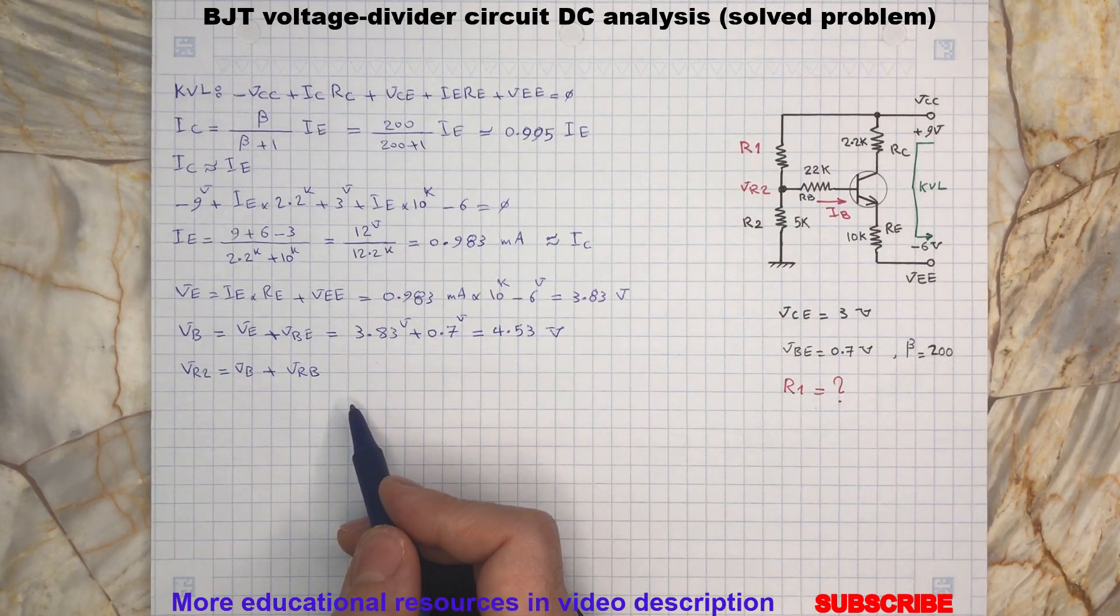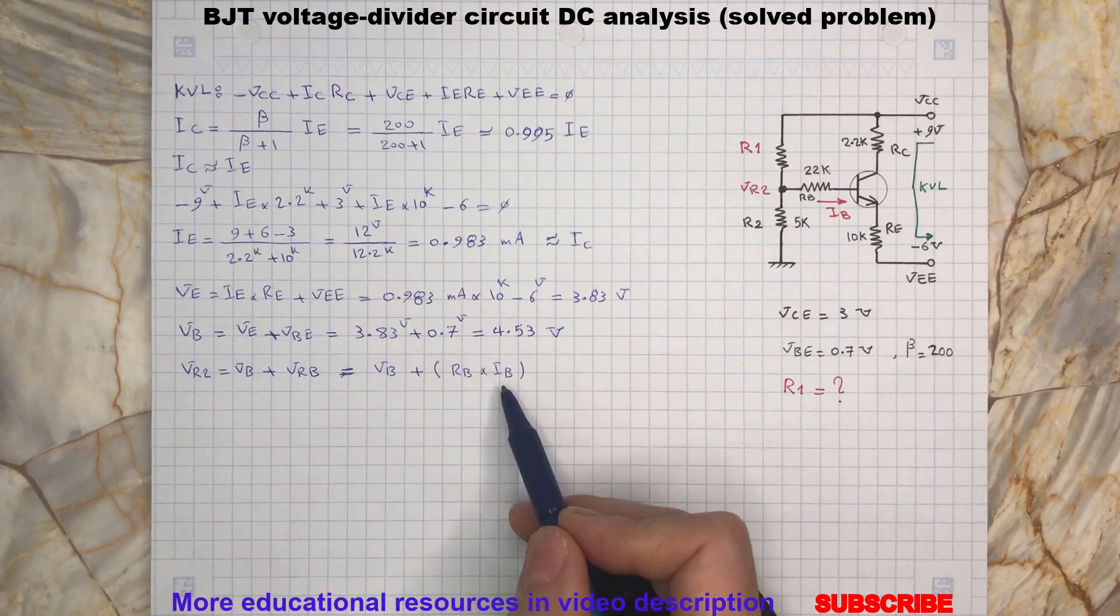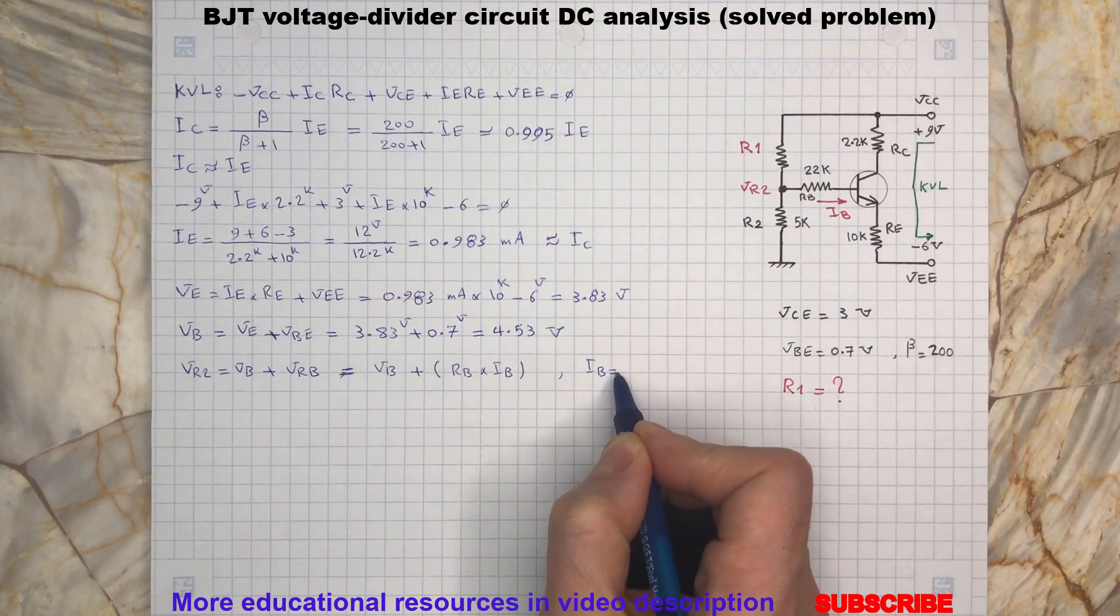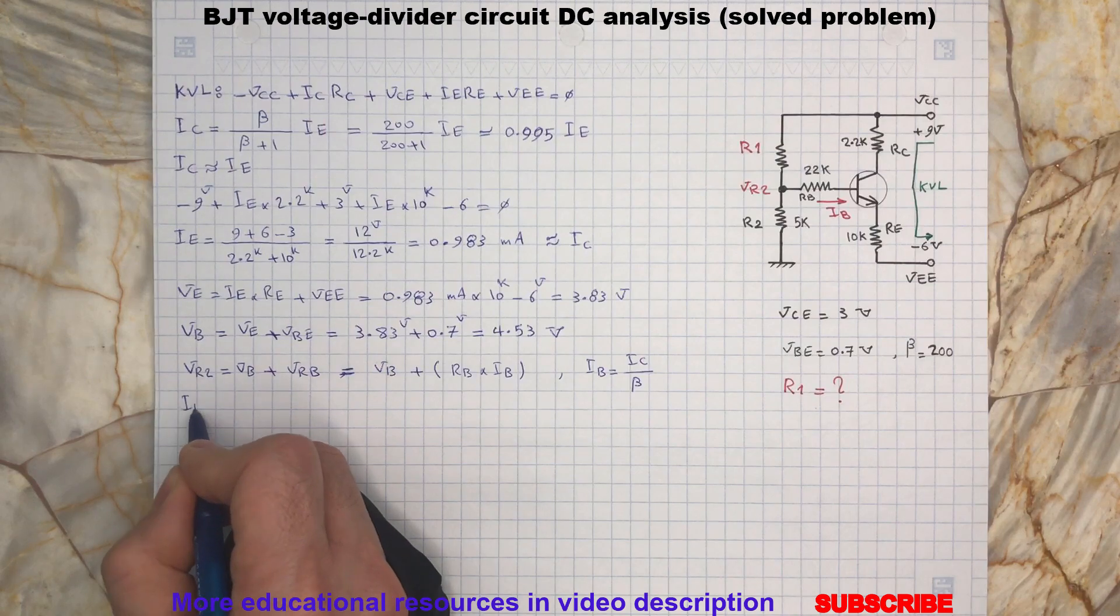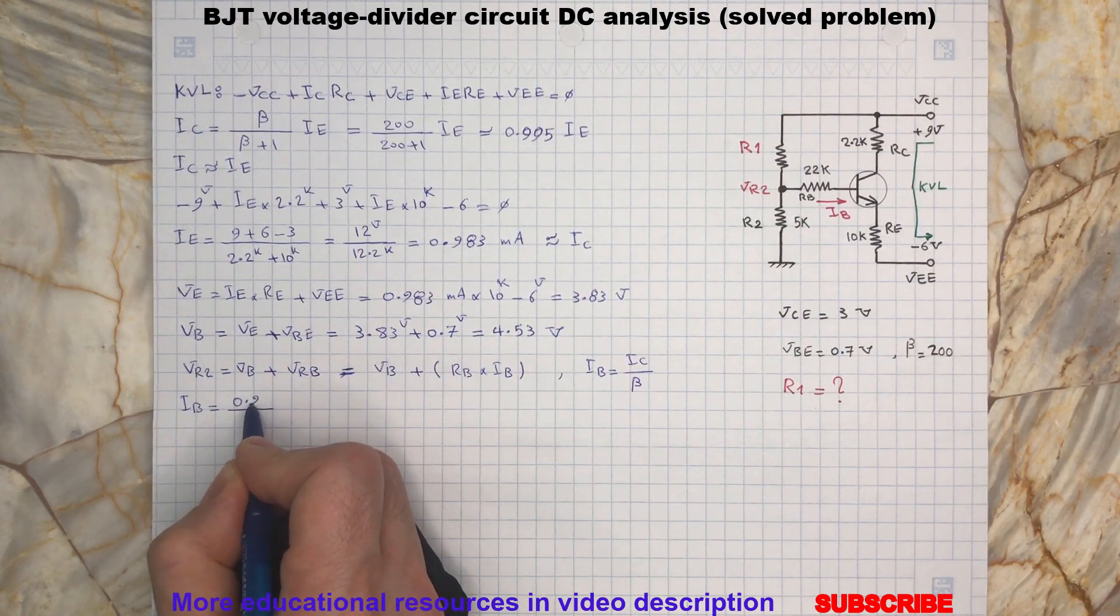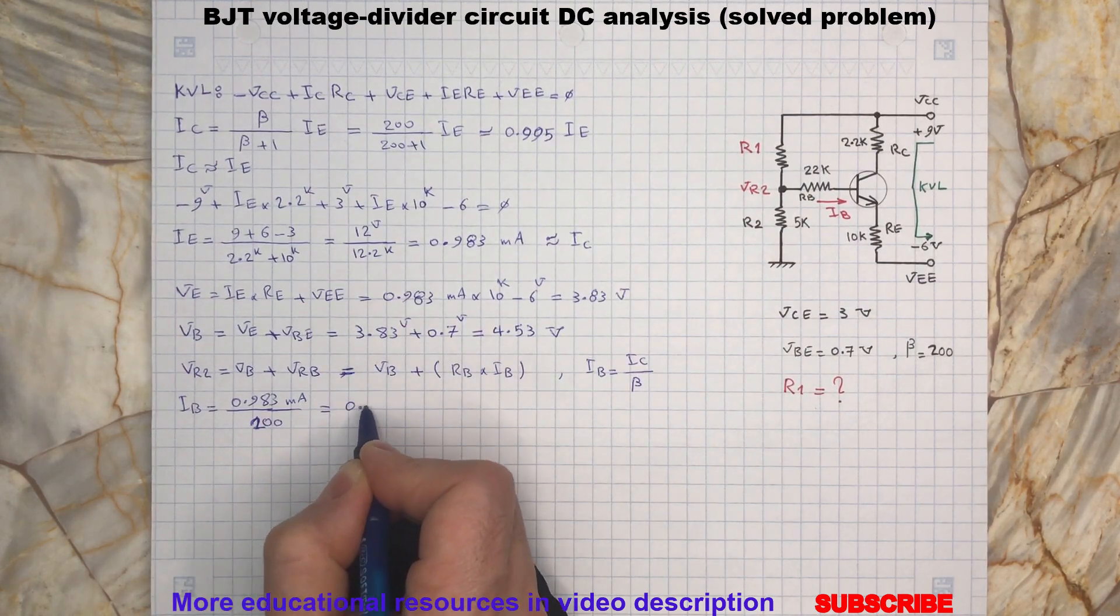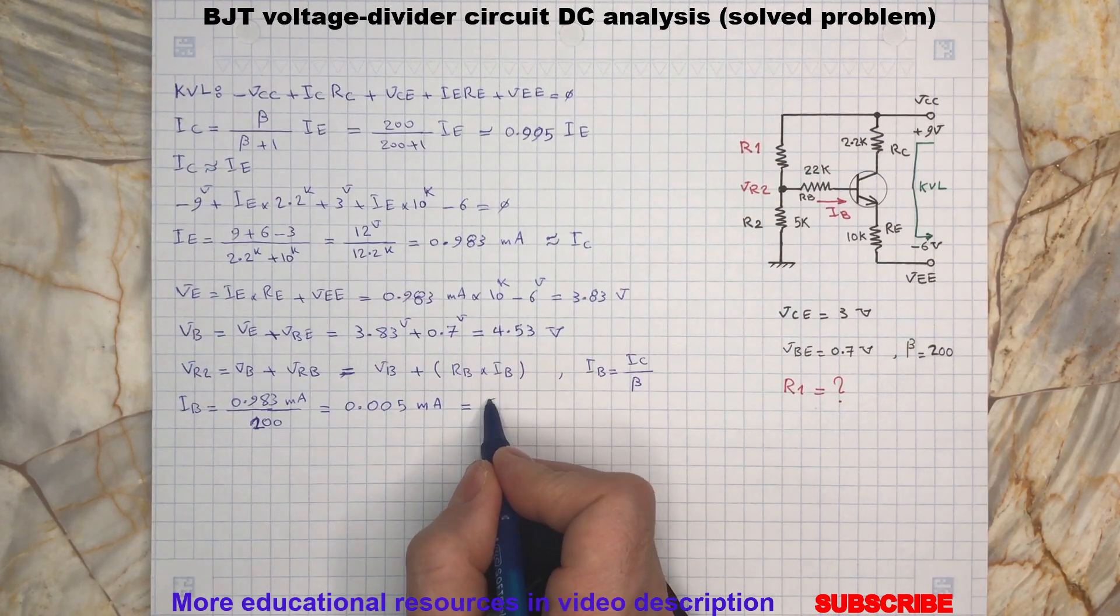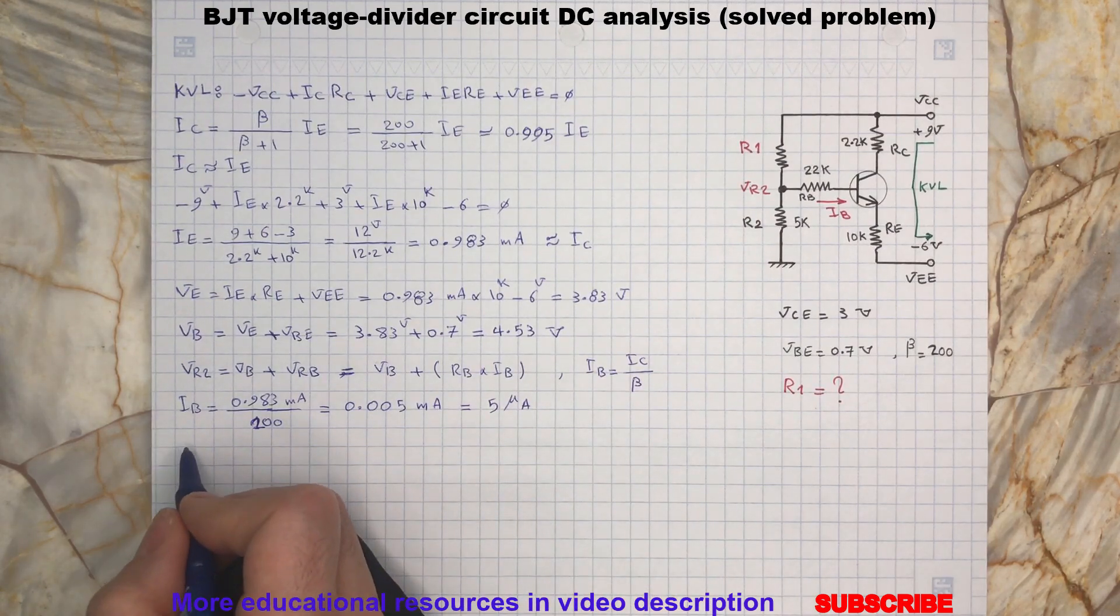So we can write... and IB which is the base current can be calculated from... which is 5 micro amp. So VR2 will be...